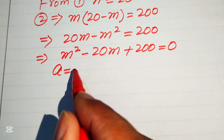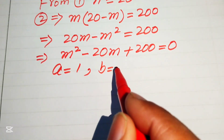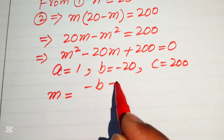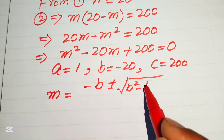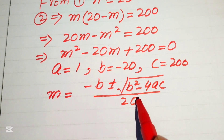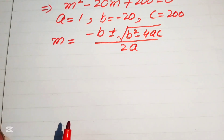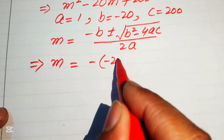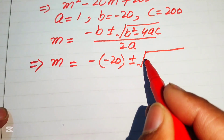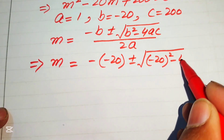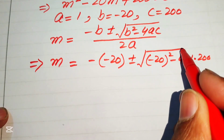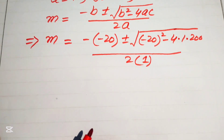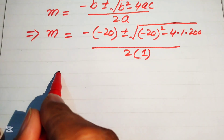We identify the coefficients: a equals 1, b equals minus 20, and c equals 200. The quadratic formula is m equals minus b plus or minus the square root of (b squared minus 4ac), all divided by 2a. Substituting in: m equals minus(minus 20) plus or minus the square root of (minus 20 squared minus 4 times 1 times 200), divided by 2 times 1.